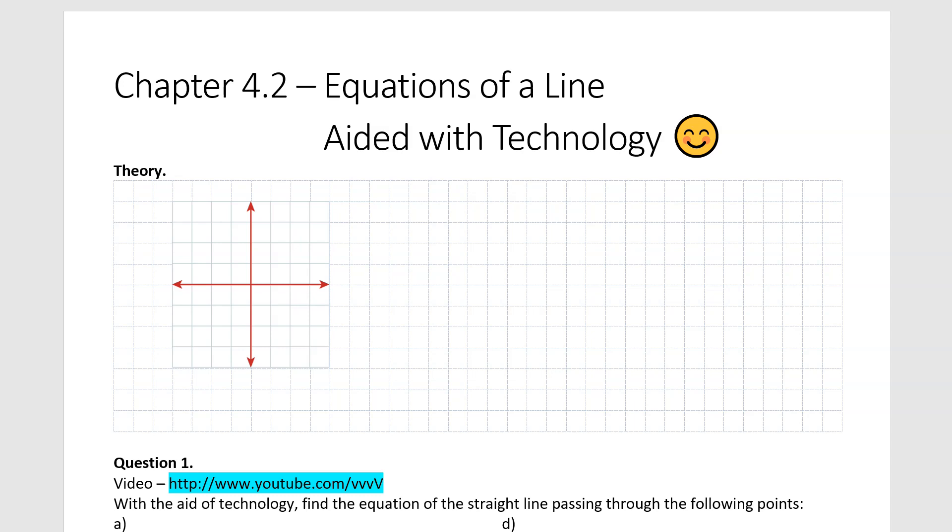Now imagine that we've got a Cartesian plane here and being a Cartesian plane we always label it such that the y-axis is this vertical one and this horizontal axis is going to be called our x-axis.